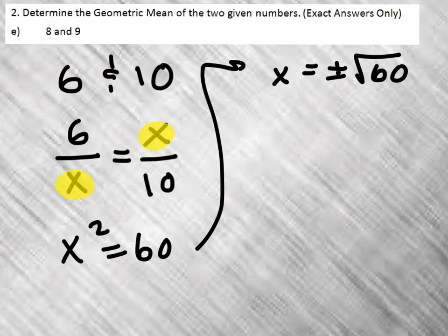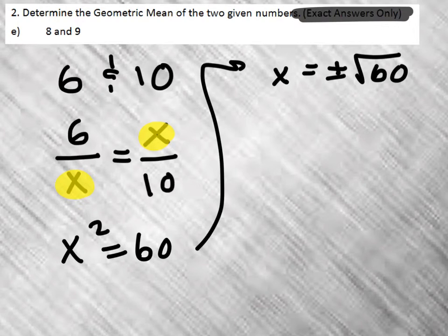Now notice this says exact answers only, and so I want to simplify this even further. Because square root of 60 is exact, but I want to simplify it. So what I do is I think of what numbers that are perfect squares that go into 60.